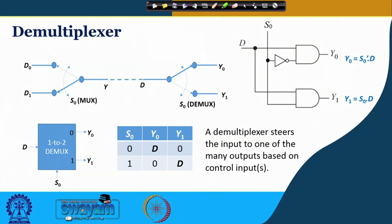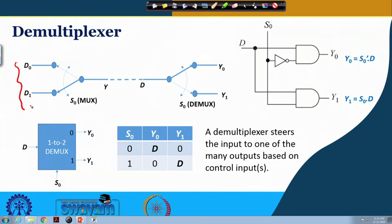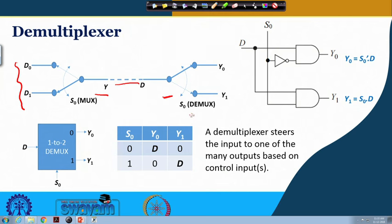The function of demultiplexer is just opposite to multiplexer. In case of multiplexer, it steers one of the many inputs to the output. This is a communication channel shared by the inputs; depending on the control input, one of the data inputs gets access to the transmission channel. On the receiver side, a control input steers the data to one of many recipients. This is the demultiplexing operation — multiplexing was many-to-one, here it is one-to-many.